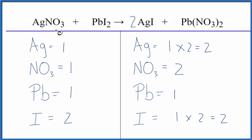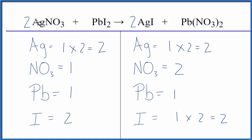Those are balanced, and we can fix the silver right now — that might even solve our problem with the nitrates. Let's put a 2 in front of the silver nitrate. 1 times 2 gives us 2 silver atoms, and our 1 nitrate times 2 gives us 2 nitrates. So those are balanced, and we're done.